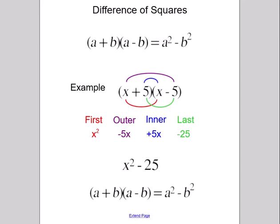Let's work this out with an example. x plus 5 times x minus 5 is a problem that fits the criteria for using the difference of squares special formula. We will use FOIL to show how the special formula was derived.